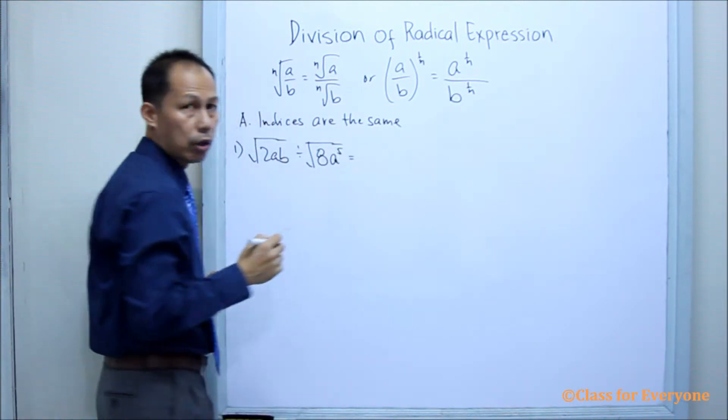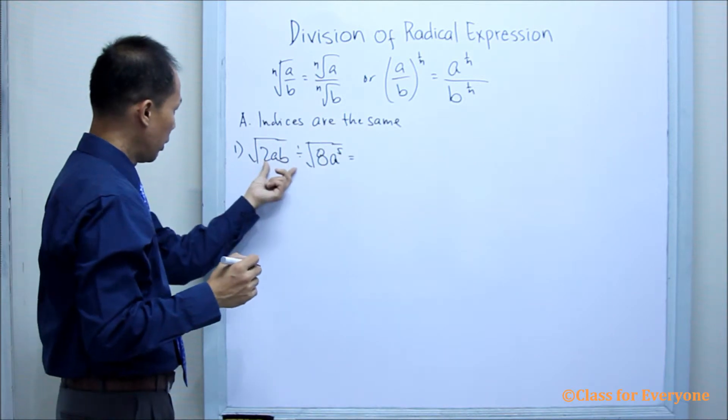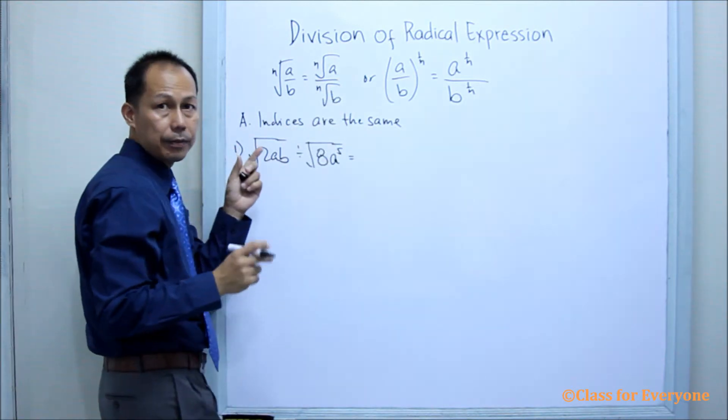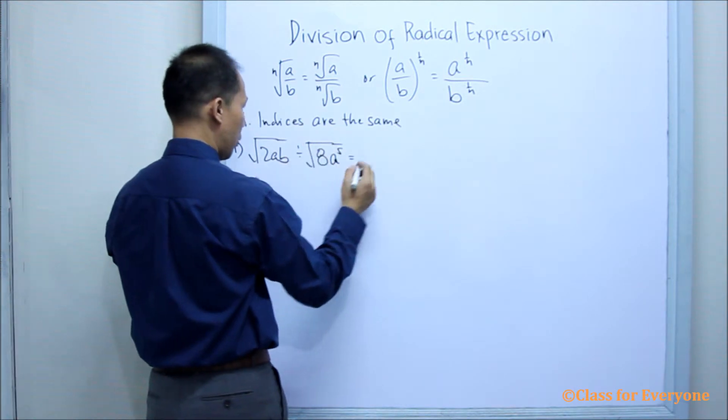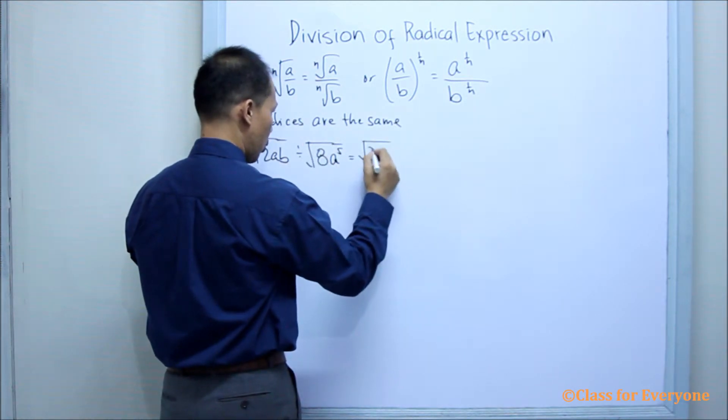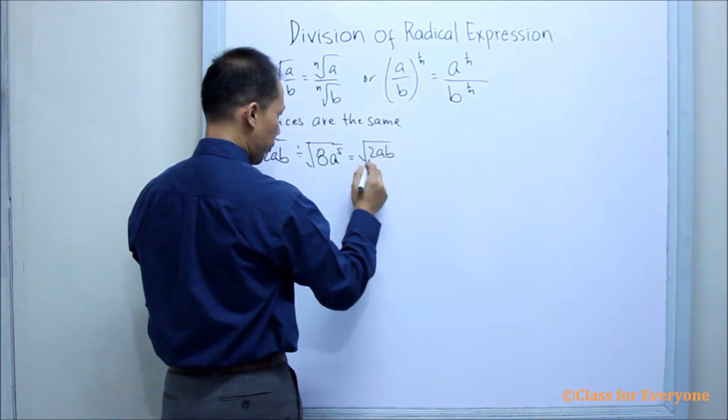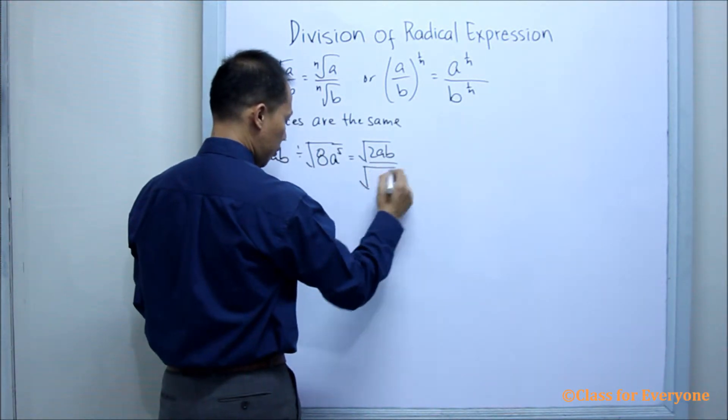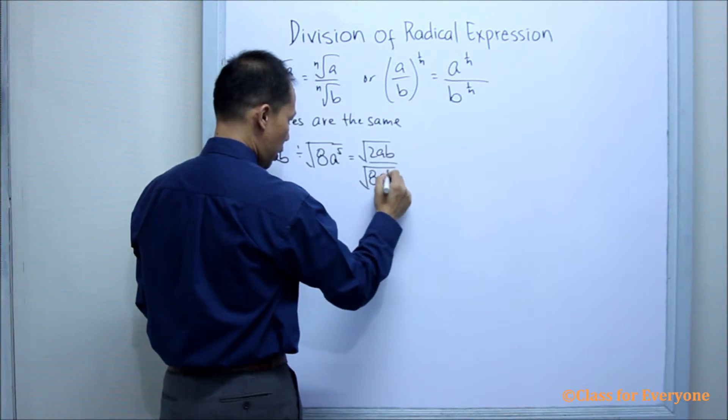And this will be equal to, we have the square root of 2ab over the square root of 8a to the 5th.